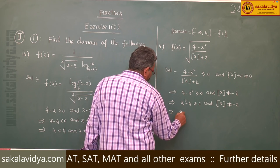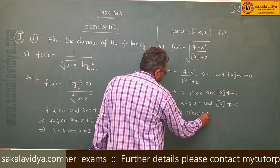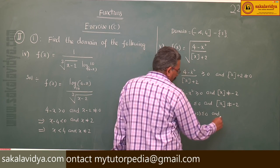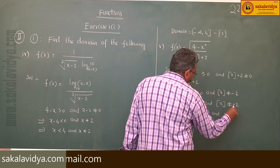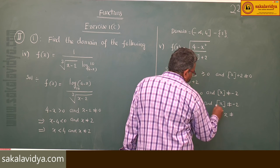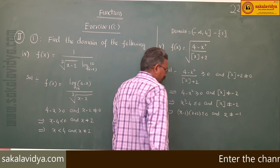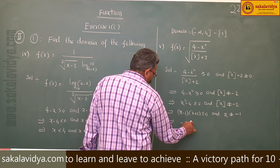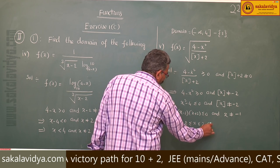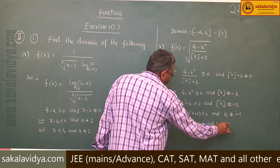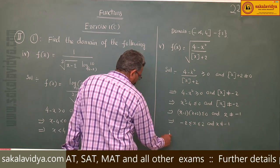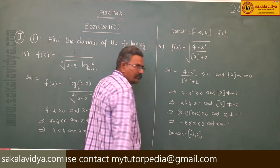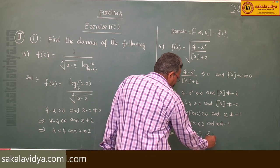This gives (x minus 2)(x plus 2) less than or equal to 0 and floor(x) does not equal to minus 2, which means floor(x) does not equal to x minus 1. So minus 2 less than or equal to x less than or equal to 2, and x does not equal to minus 1. Therefore, the domain is equal to the closed interval [-2, 2] minus the element {-1}.